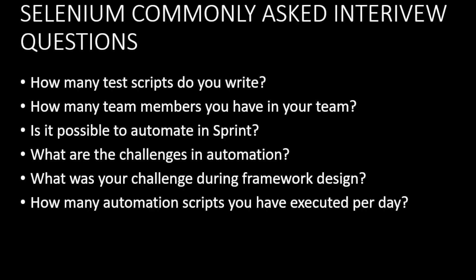Nowadays each and every project follows agile methodology. In that particular team there will be maximum 7 or 8 members. You can segregate 2 members for QA, 2 for testing, and 2 for performance. In this way we can explain the question about how many team members we have in our team.